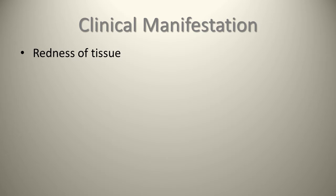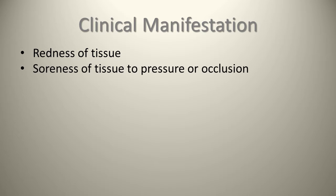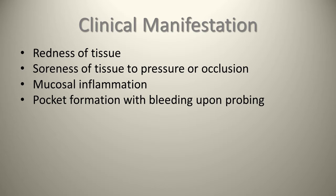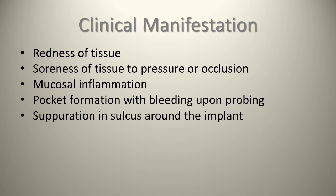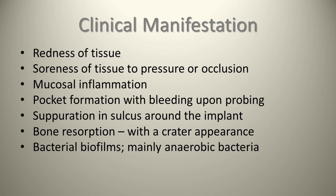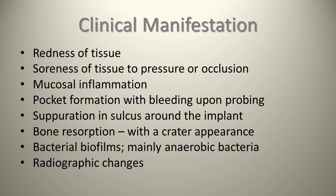Clinically, you are going to see similar findings to patients with periodontitis or other oral inflammation: redness of the tissue, soreness to pressure or occlusion, evidence of mucosal inflammation, pocket formation with bleeding upon probing, suppuration in the sulcus around the implant, and bone resorption with a crater-like appearance in the coronal third of the implant. Bacterial biofilms containing mainly anaerobic bacteria are also present, along with radiographic changes.